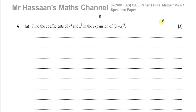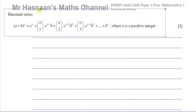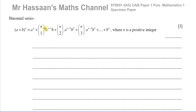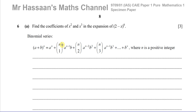In Paper 1, Pure Mathematics 1, we only deal with binomial expansion where we have a positive integer power. They're asking us to find the coefficients of x squared and x cubed in the expansion of this bracket, so we've got to expand up to those terms. We're going to use the formula from the formula book — the binomial series.